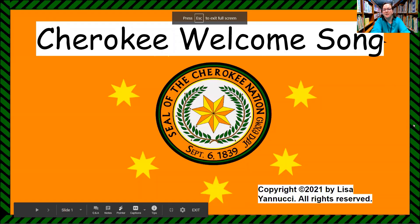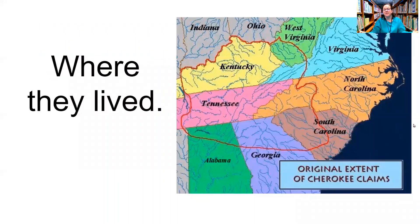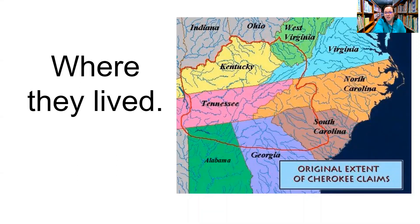So we are going to learn a Cherokee welcome song today. But first, let's figure out where do the Cherokee live? Originally, the Cherokee lived in every single piece of land that this red line is covering — part of Kentucky, West Virginia, Virginia, the mountains of North Carolina, Tennessee, a little bit of Alabama, some of Georgia, and even some of South Carolina — right smack dab in the middle of all of those states.